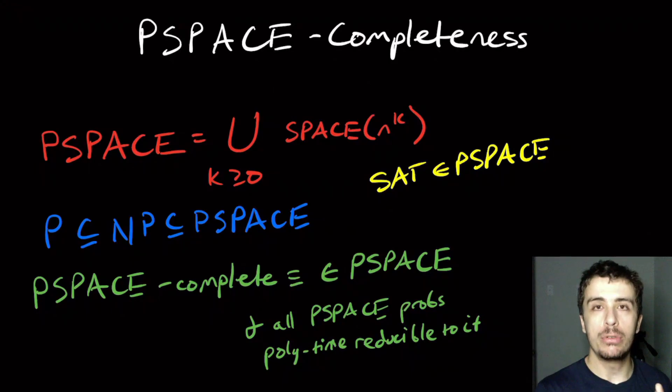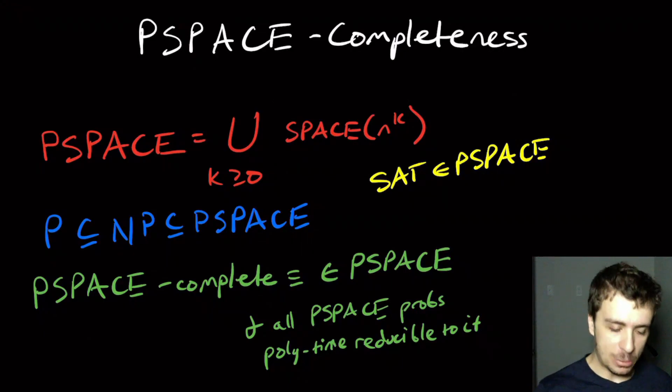What you can do instead is to write down one assignment, evaluate it. If the formula ends up being true, then obviously we're done. Otherwise, erase the assignment itself and then rewrite down the next assignment. Therefore, we will never use more than linear space in writing down the assignment.